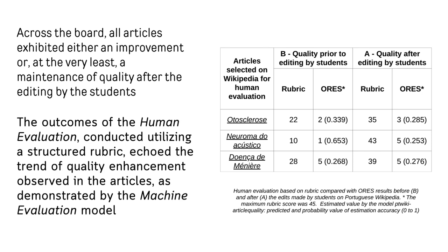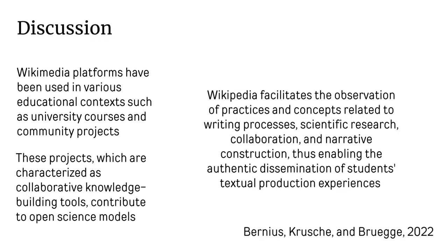Some articles increased from 22 to 35 points, while others were significantly improved, rising from 10 to 43 points. It is important to discuss the integration of Wikipedia into educational settings, as it can facilitate the enhancement of writing, research, and collaboration skills among students.